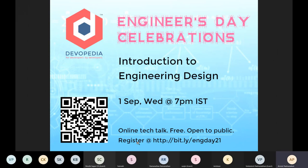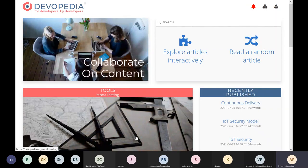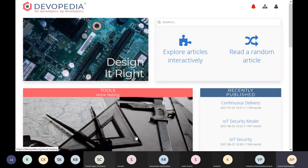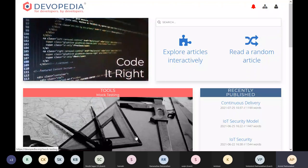We have scheduled 15 talks, typically on weekends. Watch out for this Friday, Saturday, and Sunday — we will have a bunch of talks, and the same will happen on the following weekends as well. Today's talk is Introduction to Engineering Design. Some of you may be new to Devopedia.